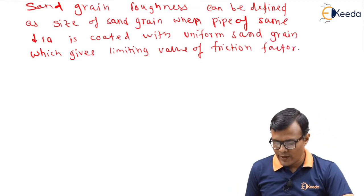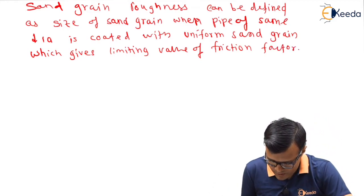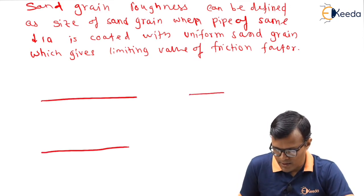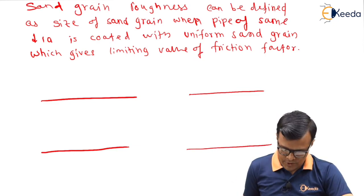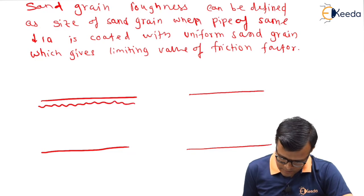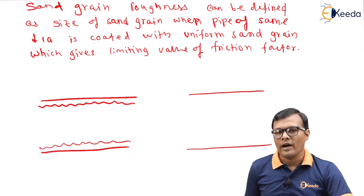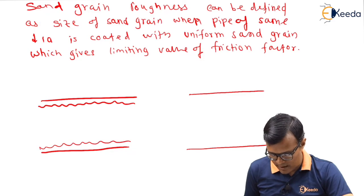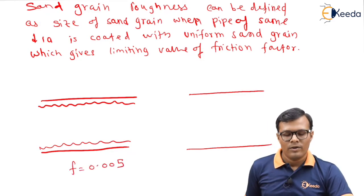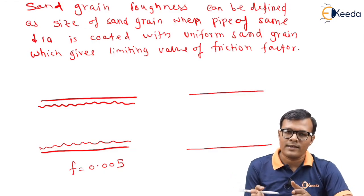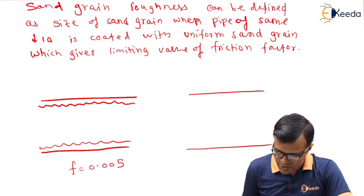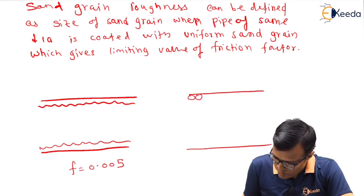So in this case we are considering two types of pipes. For explanation purpose, I am taking some assumptions. Say there are two pipes, one is having natural roughness like this, and value of friction factor is say F equal to 0.005.